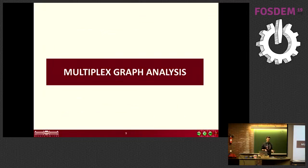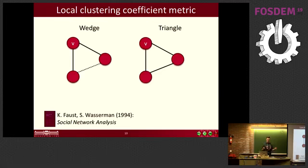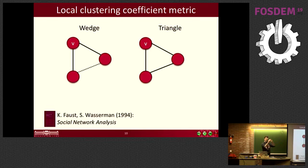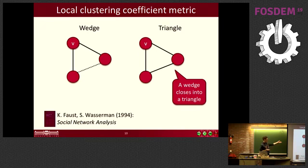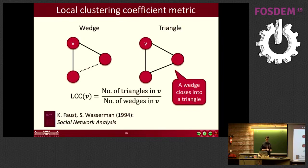In graph analysis we often define metrics like the local clustering coefficient (LCC). We start from each node V and look for wedges — a node with two neighbors that may or may not be connected. If they are connected, they form a triangle. The clustering coefficient is the ratio of wedges that close into a triangle to the total number of wedges. This dates back to the 1960s and is a very popular tool in social network analysis.